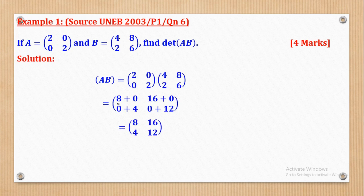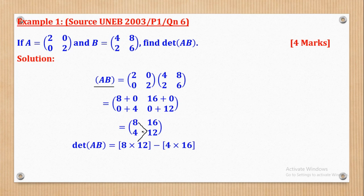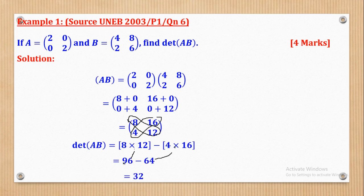After simplifying, Matrix AB is [8, 16; 4, 12]. Now we find its Determinant: Det(AB) equals 8 times 12 minus 4 times 16 — always Major Diagonal first, then minus Minor Diagonal. Simplifying: 8 times 12 gives 96, and 4 times 16 gives 64. When we subtract we get 96 minus 64 equals 32, so the Determinant of AB is 32.